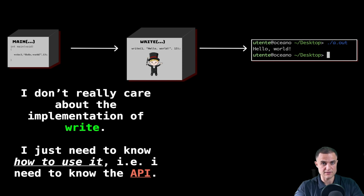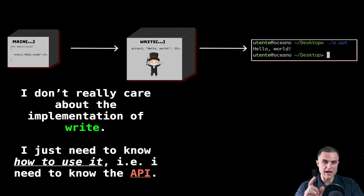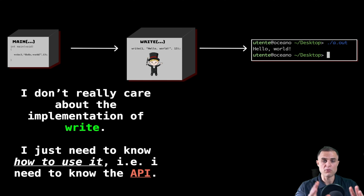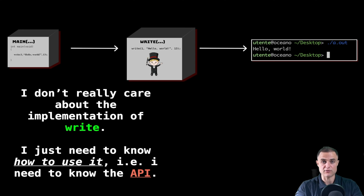The API is another very important concept in computer science that you definitely need to understand. So I include the Unix standard file, I can use all the functions, I write my code, I write my main function — which is the entry point of all programs in C — and my main function is going to call the write function. I insert inside the write function all the inputs required by the API, and then something magical happens: I get output on my display, which is the characters I plugged in as arguments.